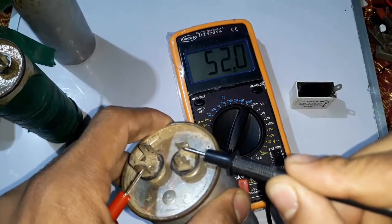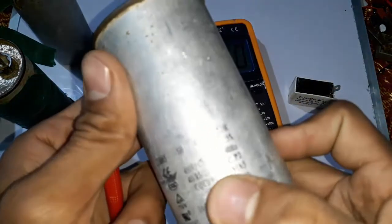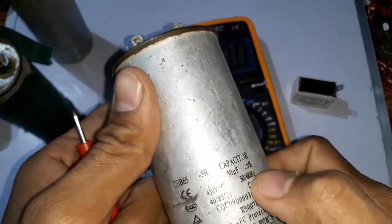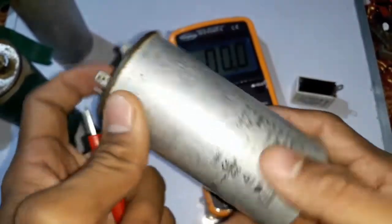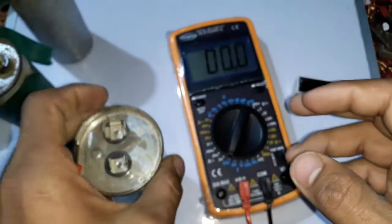Here this capacitor is 52 microfarad and the written value is 50 microfarad plus minus 5%, which means that this value will be 5% higher or 5% lower.